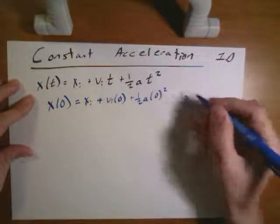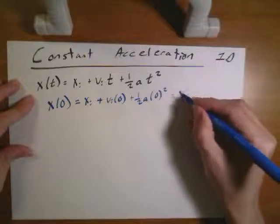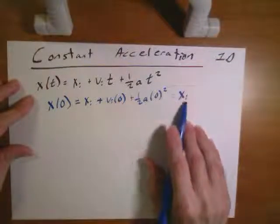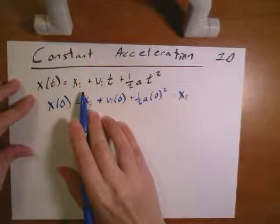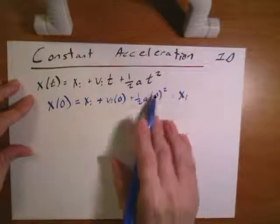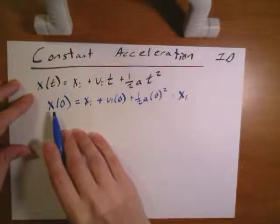So what's left is indeed that first term xi. So the proper interpretation is this xi is the position at a time equals 0. If I put in a time of t, that would give me my final position.